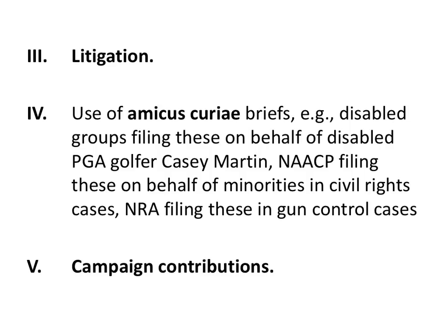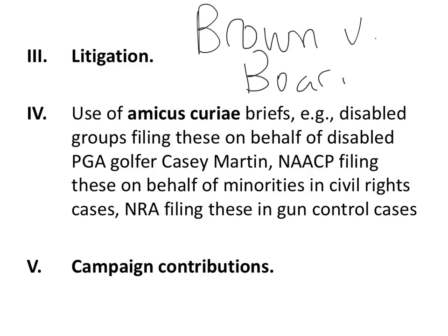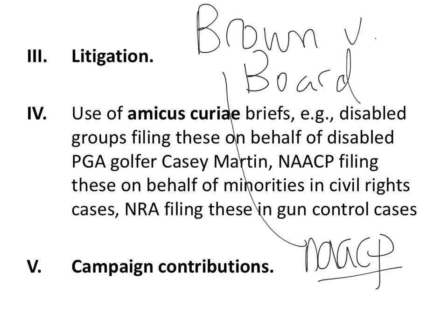Another way interest groups accomplish their goals — and this is a big one — is litigation, meaning through lawsuits. There are so many examples, but how about Brown versus Board of Education? This was Black students who wanted to attend a white school and end segregation. This lawsuit happened because a family chose to be represented by the NAACP, which is an interest group. Filing lawsuits to accomplish a goal happens all the time.